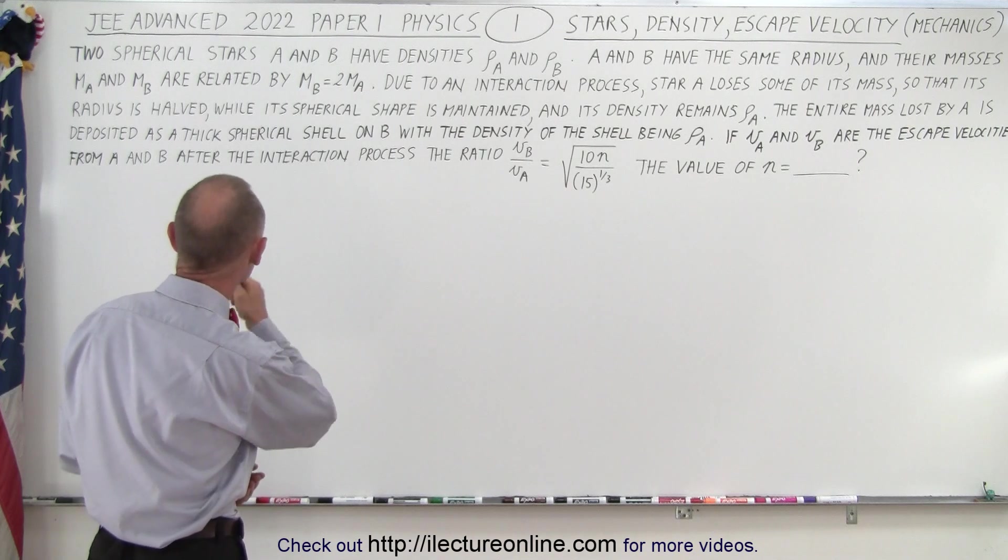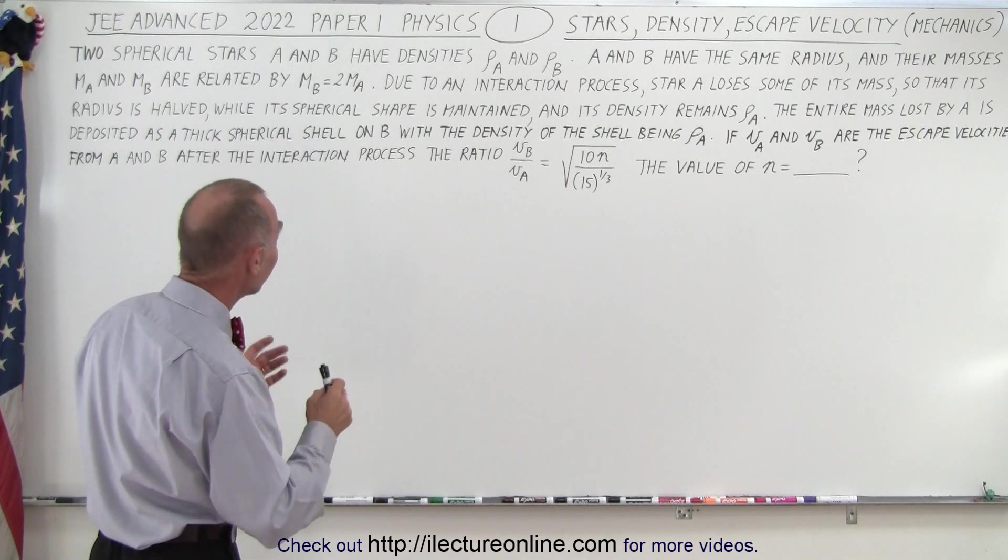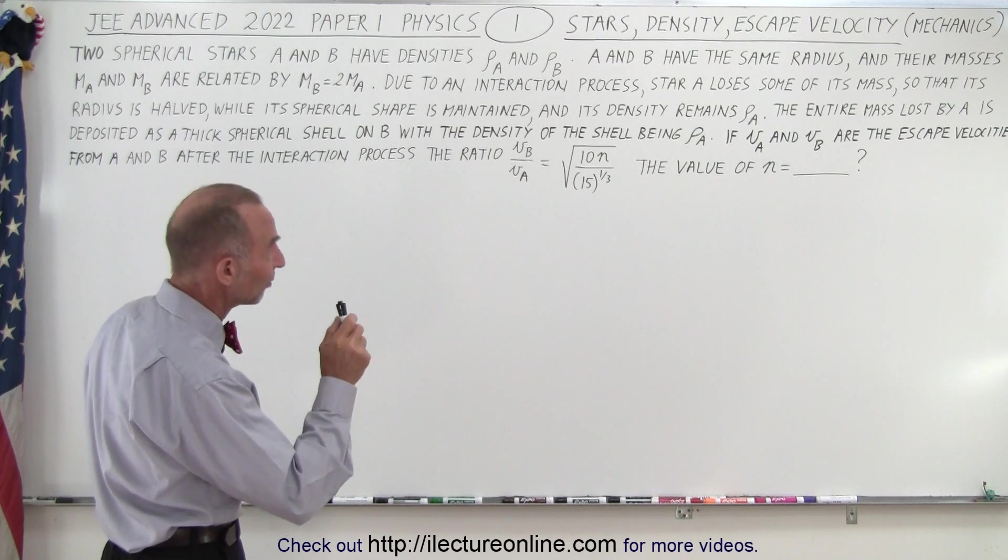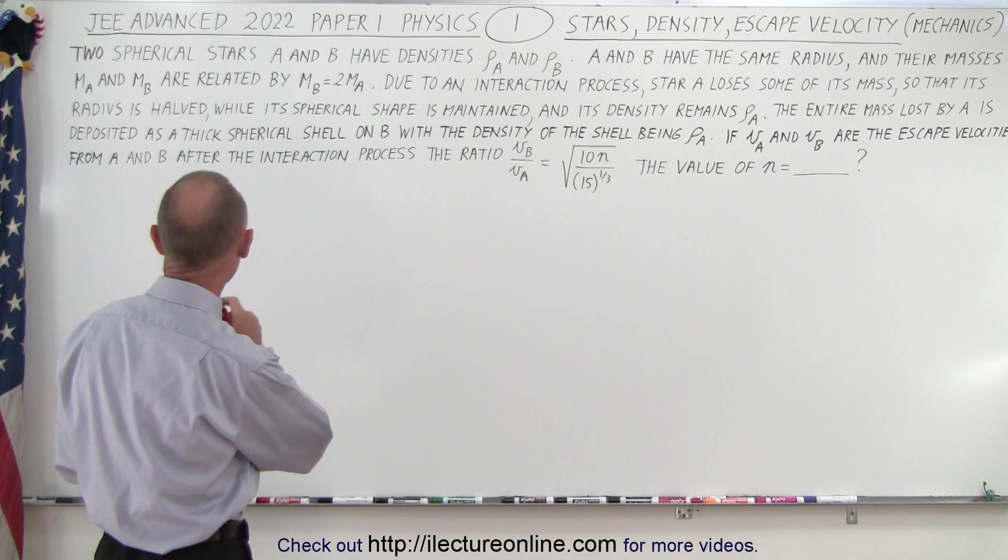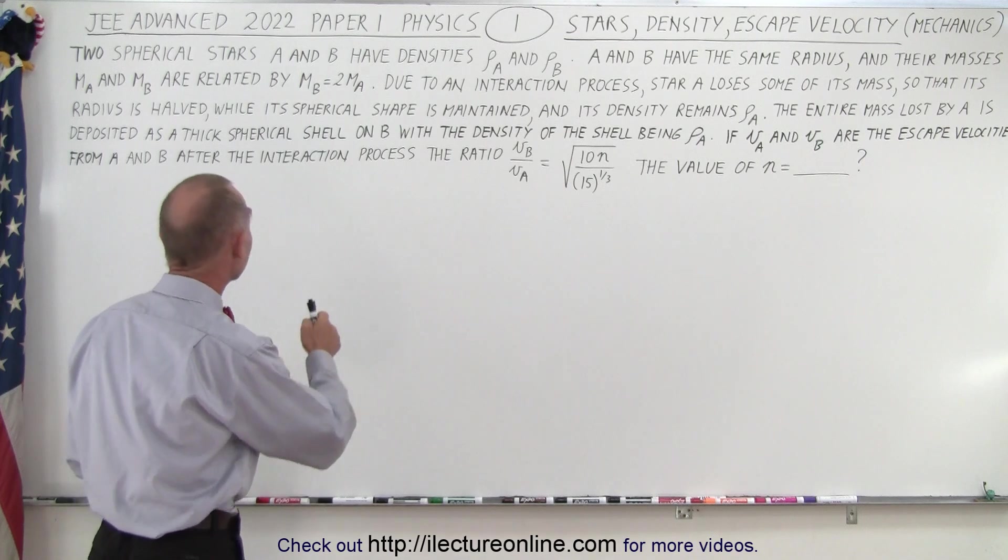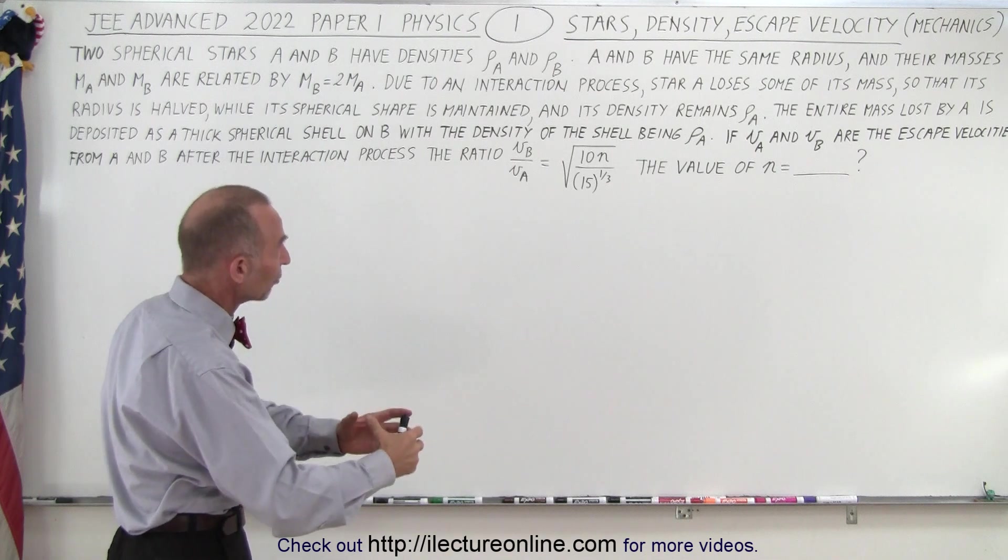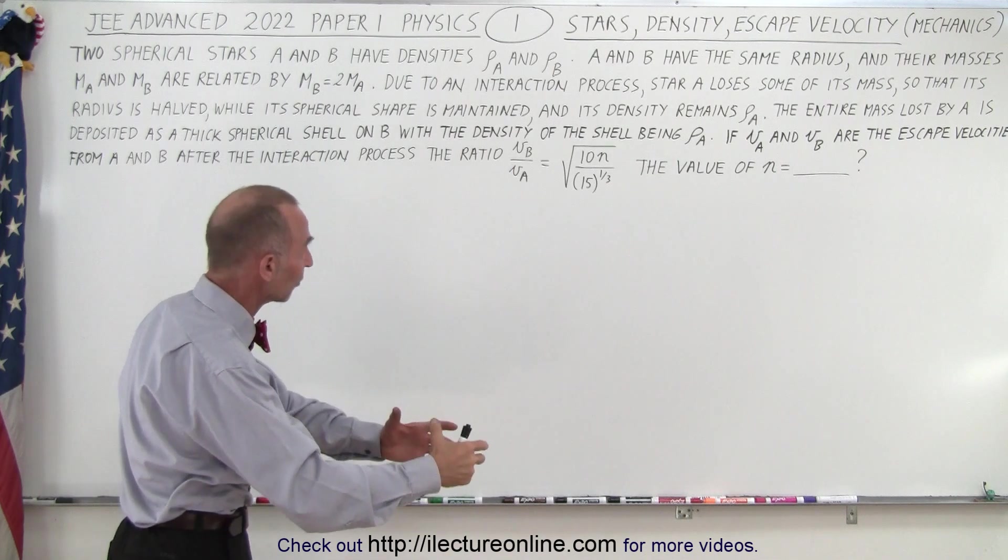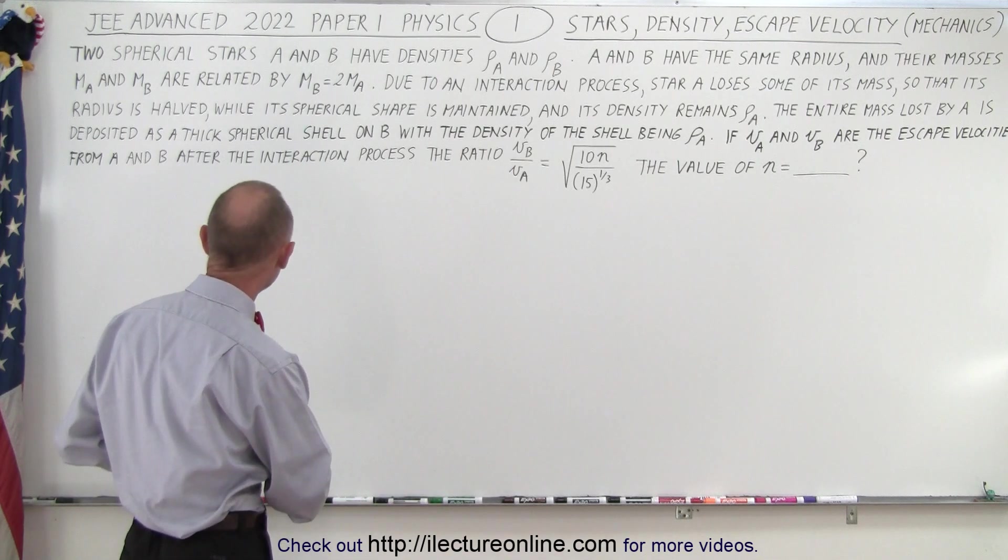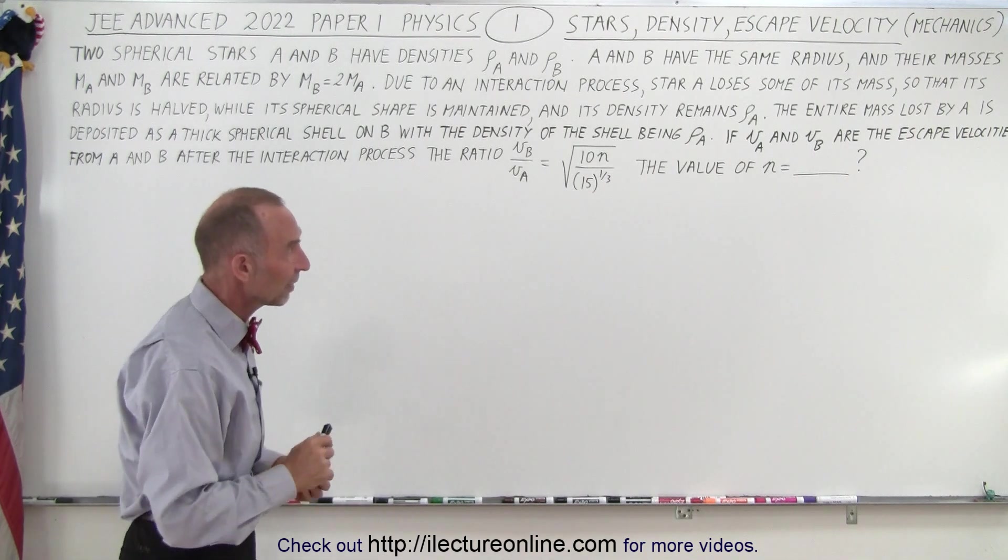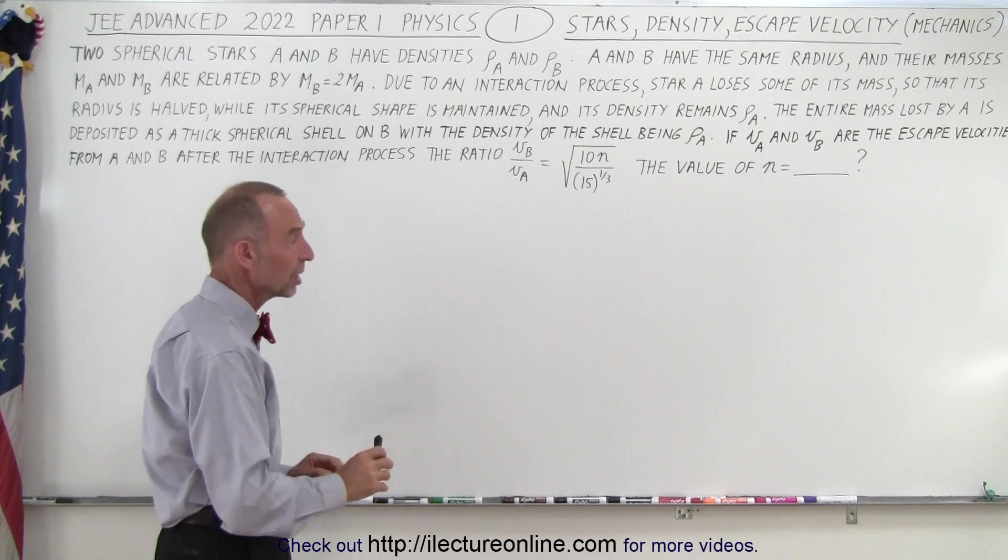Notice we have two spherical stars, A and B, having densities of density A and density B. A and B have the same radius, and their masses, MA and MB, are related by that MB is twice the mass of MA. Due to an interaction process, star A loses some of its mass, so that its radius is halved, while its spherical shape is maintained, and its density remains density A, so the density doesn't change.